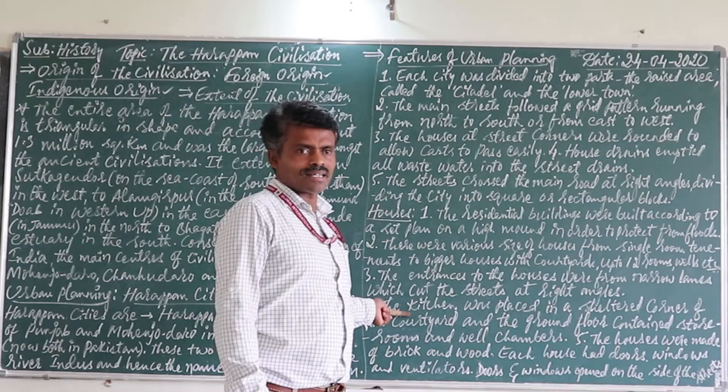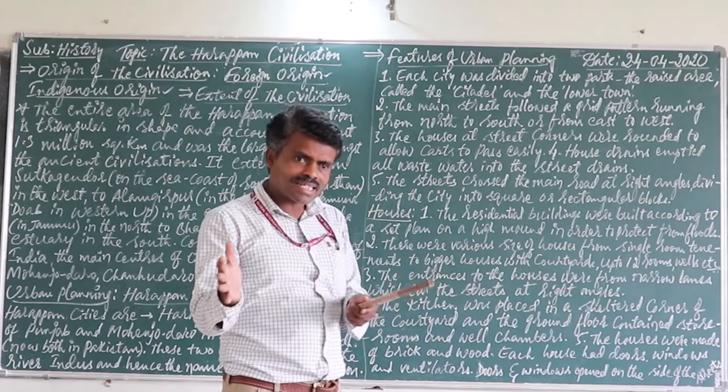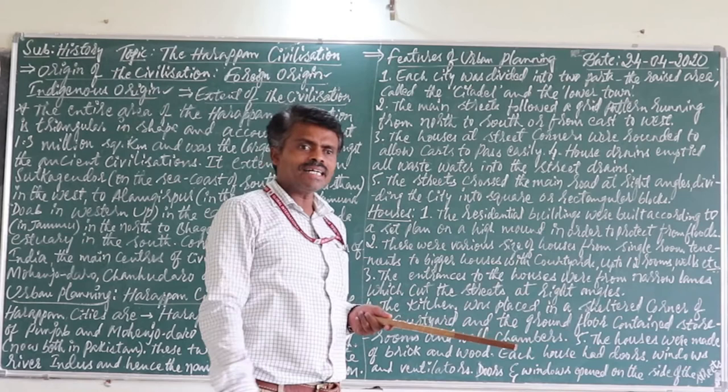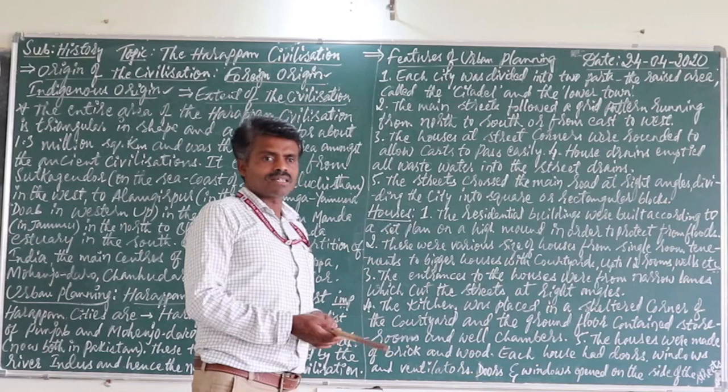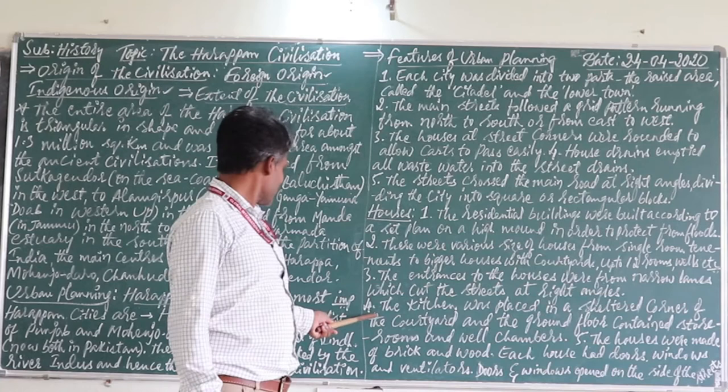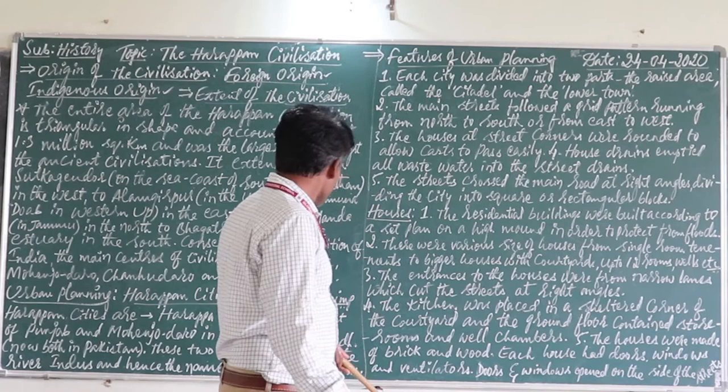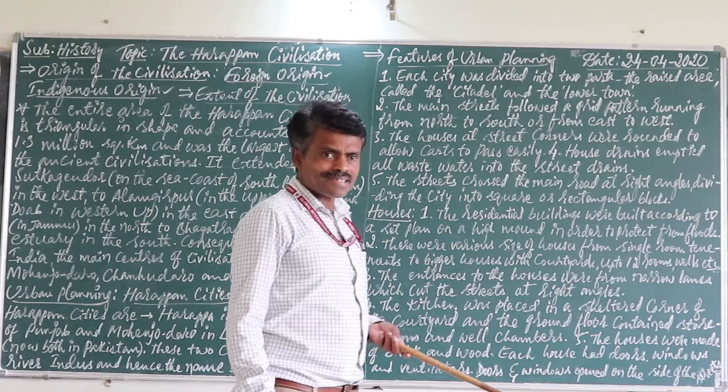Today's kitchen was their idea. Today's drainage was their idea. Today's construction plan of buildings was their idea. Today's roads construction — everything was an idea from Harappan civilization. The fourth characteristic includes the kitchen, courtyard, store room, and chambers — all contributions of the Harappan civilization for us.